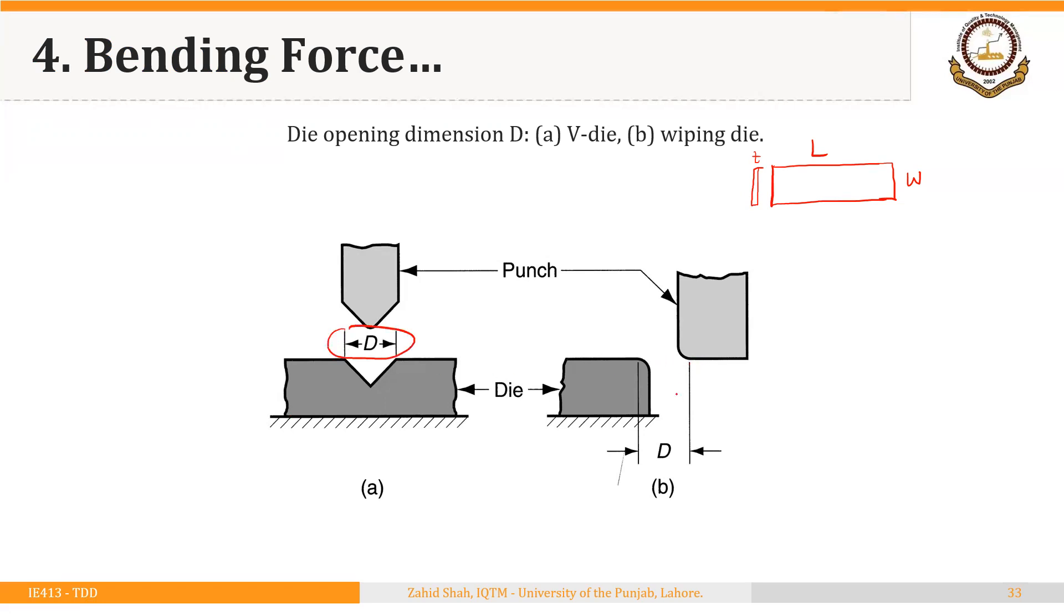And in the case of edge bending, this is the D that is equal to the gap between the punch and the die and some of the radii. So you could see this is that dimension.